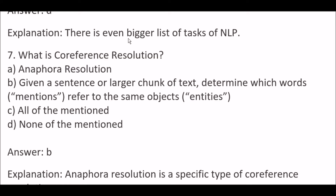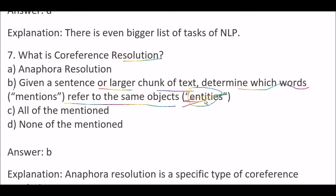Next question: what is coreference resolution? Options are: A) Anaphora resolution, B) Given a sentence or large chunk of text, determine which word mentions refer to the same object or entities, C) All of the mentioned, D) None of the mentioned. The right answer is option B — given a sentence or large chunk of text, it determines which word mentions refer to the same object or entity.